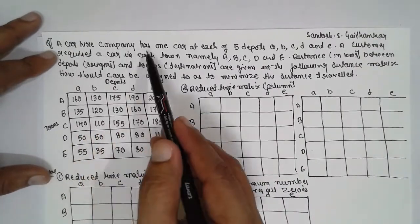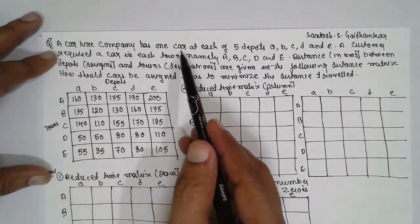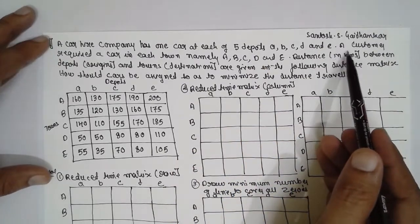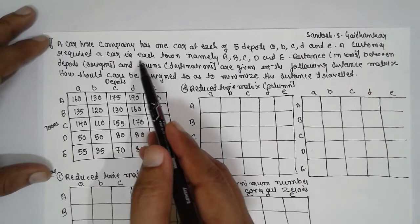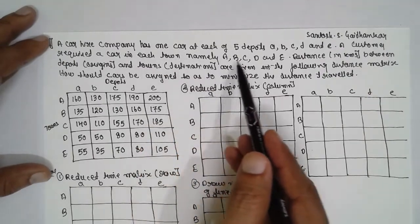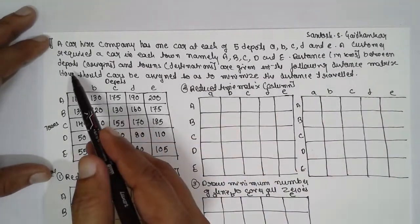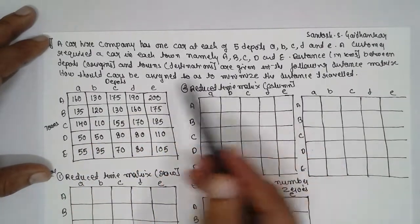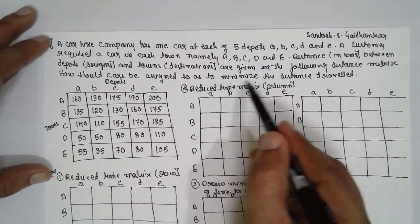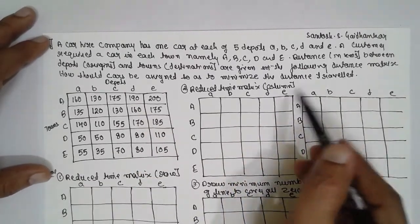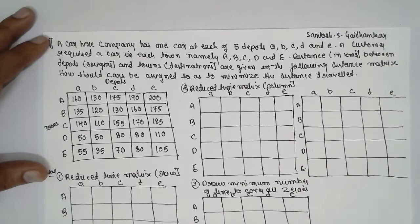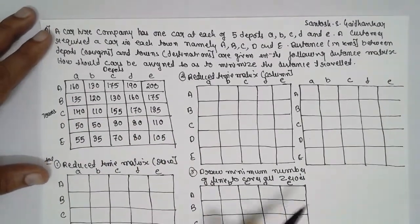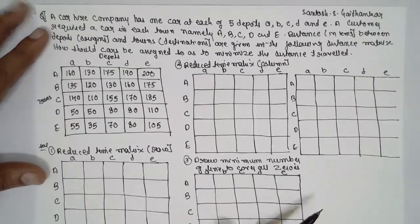A car hire company has one car at each of the five depots A, B, C, D, and E. A customer requires a car in each town, namely A, B, C, D, and E. The distances between each depot and town are given in the matrix. We have to find the minimized distance traveled using this matrix.